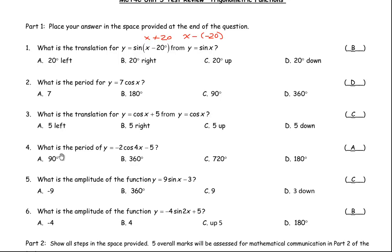For question number 4, we're asked: what is the period for y equals negative 2 cos 4x minus 5? The basic period is 360 degrees. You take 360 degrees and divide it by the 4 from the 4x. So 360 divided by 4 gives you 90 degrees. So A is the correct answer for question number 4.